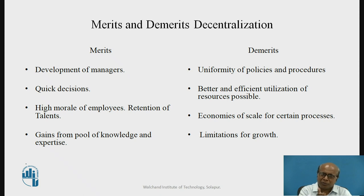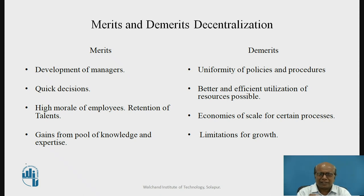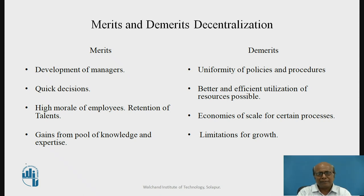Second merit is quick decisions — you do not have to refer upwards and wait every time, so quick decisions are possible. This leads to higher morale of employees, because when decentralization is there, everybody is happy that they have some authority and some decision-making scope. That naturally elevates morale and retention of talents, because talented people want to make their own decisions. If they are not given that freedom, they will try to leave the organization for better prospects. One more advantage is gain from pool of knowledge and expertise, because there is so much talent dispersed throughout the organization, and we can get advantage of that in decision-making, which definitely benefits the organization.